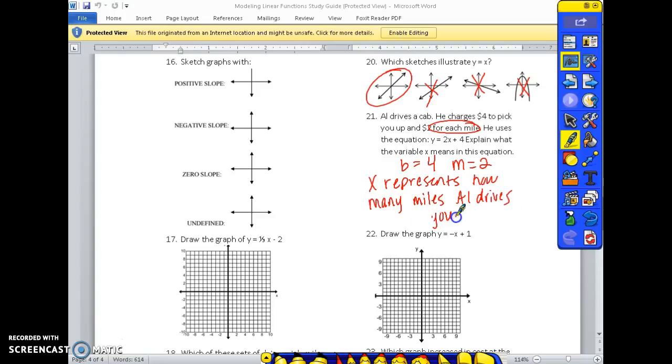Number 22, draw the graph y equals negative x plus 1. You're going to start at the y-axis. That is your b. And your slope is negative 1. So you're going to go down one to the right one. And that's your graph.